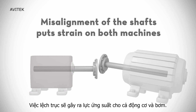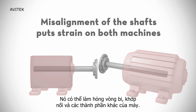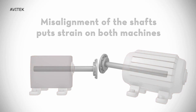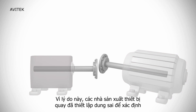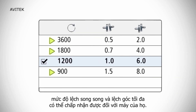Misalignment of the shafts puts strain on both the motor and the pump. It can damage the bearings, the couplings, and other machine components. For this reason, manufacturers of rotating equipment have established tolerances defining the maximum acceptable levels of angular and offset misalignment for their machines.